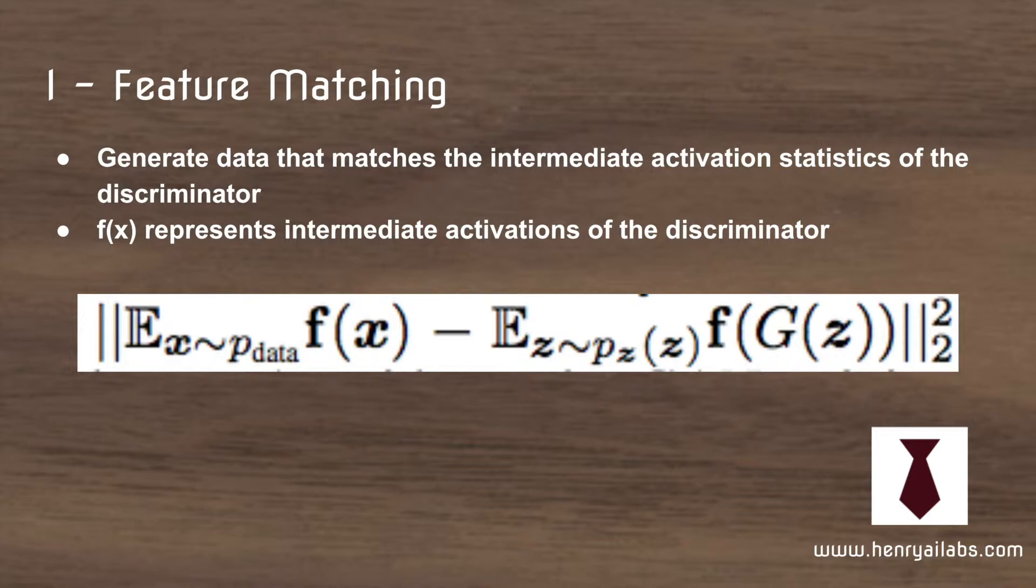The modularity of deep networks says you can take an intermediate activation layer and do things with these intermediate features—vectors or tensors that it produces on the way to its output. The idea is that the generator should try to produce images that match the intermediate activation statistics of real images. That's formally specified with this L2 loss function.